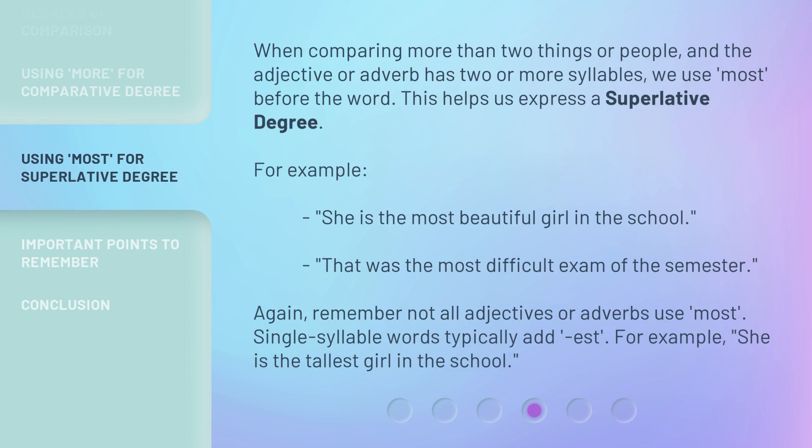When comparing more than two things or people, and the adjective or adverb has two or more syllables, we use most before the word. This helps us express a superlative degree. For example, 'she is the most beautiful girl in the school' and 'that was the most difficult exam of the semester.' Remember, not all adjectives or adverbs use most — single-syllable words typically add -est. For example, 'she is the tallest girl in the school.'